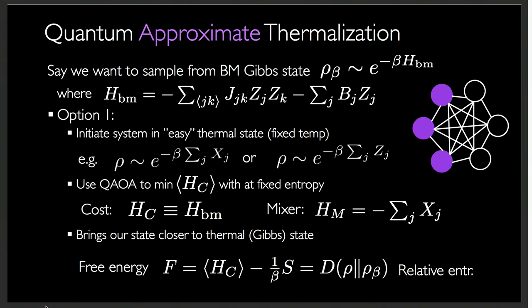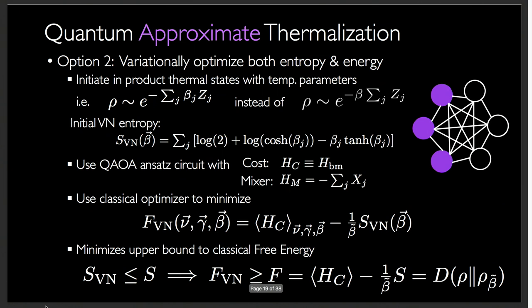The free energy is actually equal to the relative entropy to the thermal state. That means you're going to get close to the thermal state if you minimize the free energy. So the way we do it, we start with an easy thermal state of each individual qubit. And then we use the QAOA to minimize the Boltzmann machine Hamiltonian with a typical mixer. So this works well, but you're kind of bound by your guess of entropy. You're not fully minimizing the free energy, but this works pretty well and it has very few hyper parameters to optimize classically.